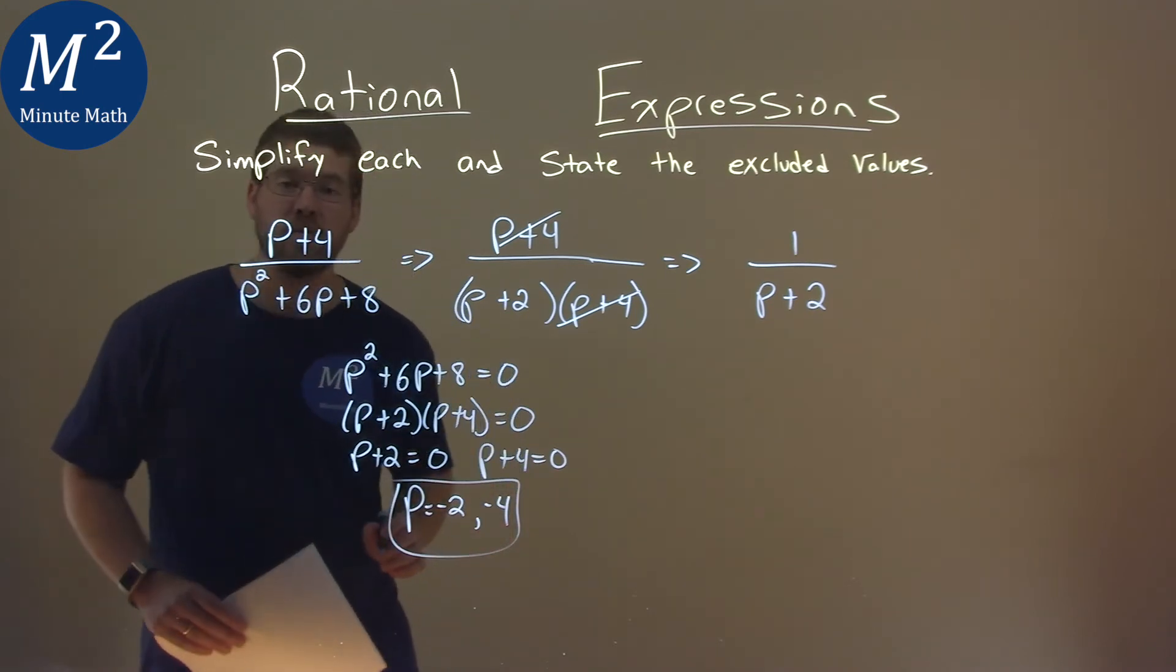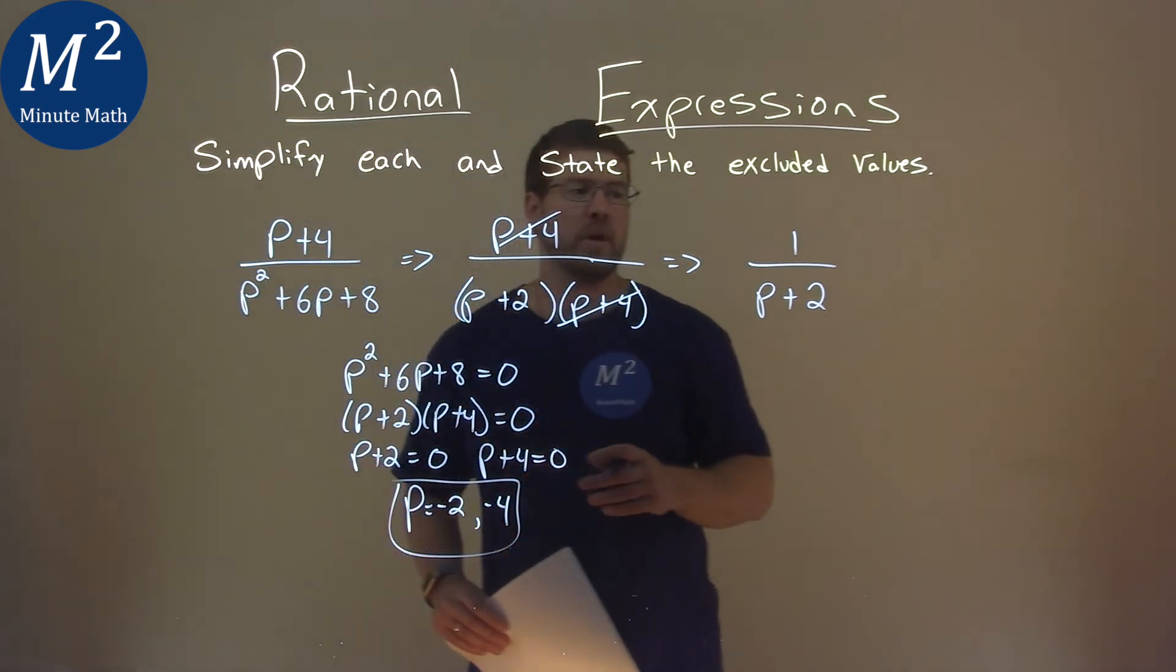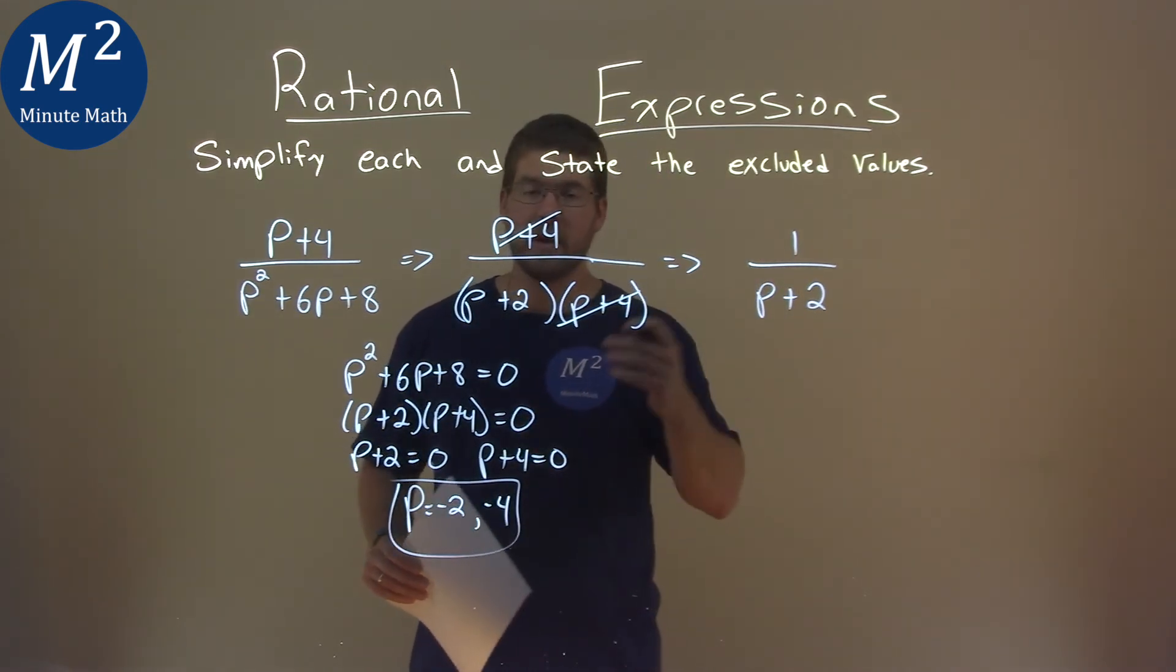And so, the two excluded values here are negative 2 and negative 4, and our simplified expression is 1 over p plus 2. That is our final answer.